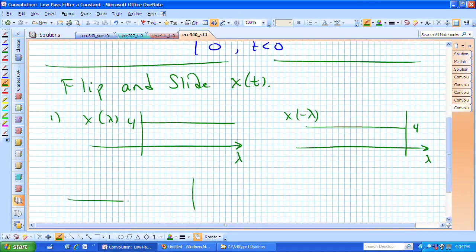We can then obtain the waveform that we need in our convolution integral, which is x of t minus lambda. It has a magnitude of 4.